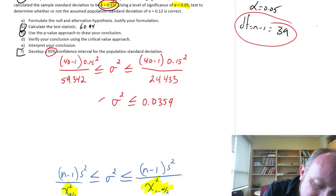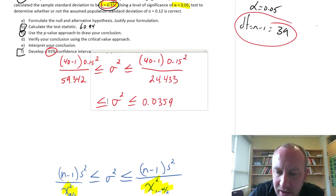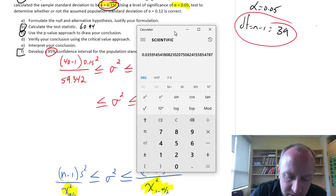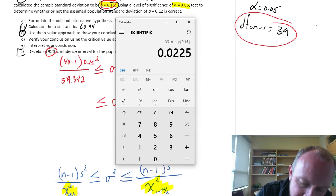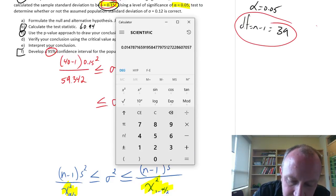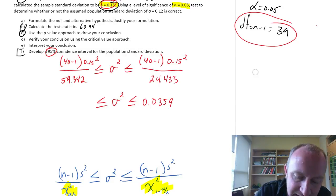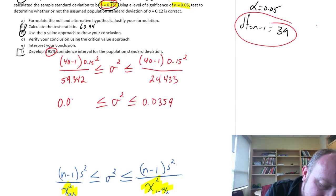There we have a 95% confidence interval. That lower limit - this is 39 times 0.15 squared divided by 59.342, which equals 0.0148.